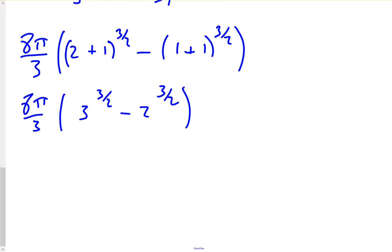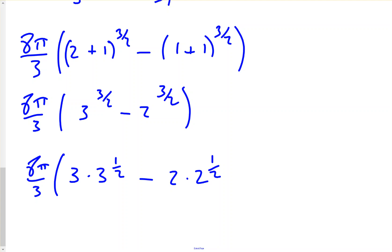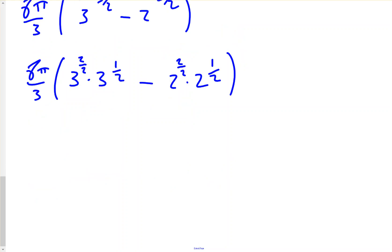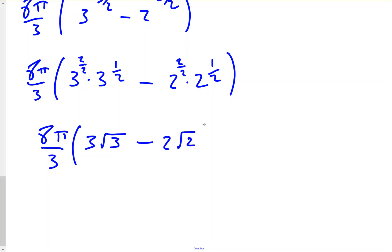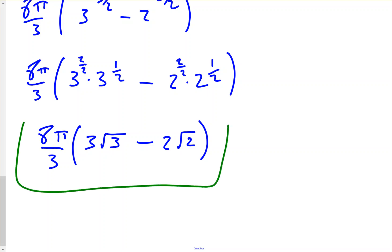Rewriting the fractional exponents: 3^(3/2) = 3·√3 and 2^(3/2) = 2·√2. So the final answer is 8π/3 · (3√3 − 2√2). You could distribute the 8π/3, but it's fine to leave it in this form.